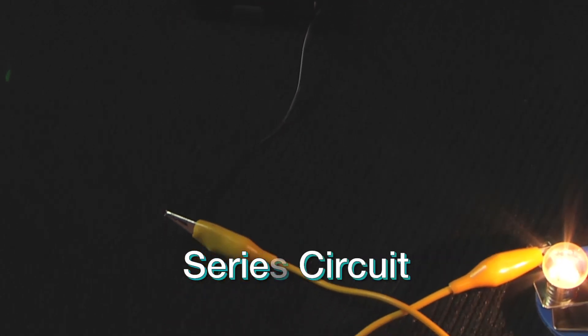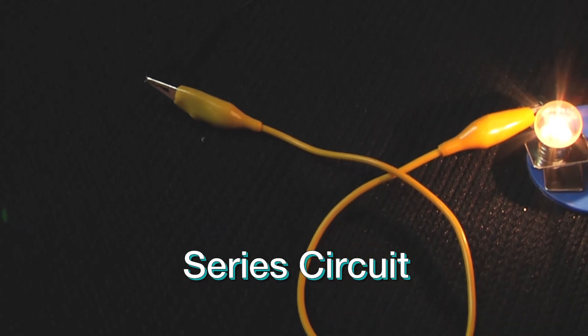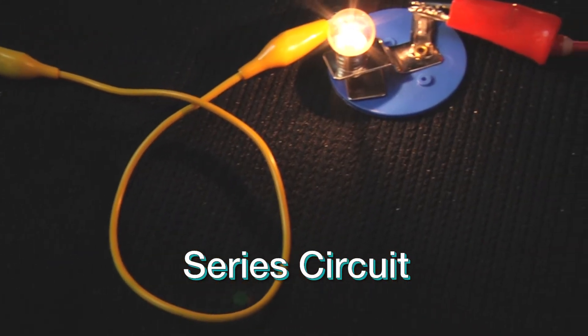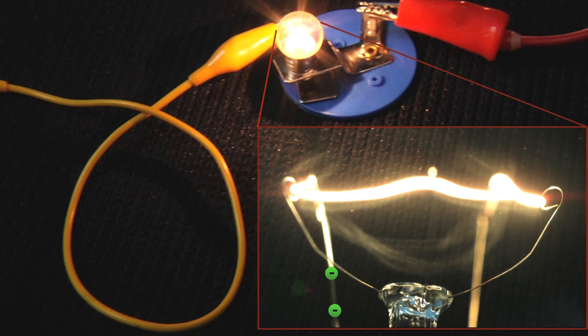In this series circuit, which powers this small bulb, electricity will travel from the positive terminal of the battery through the filament of the bulb, powering it, then continuing to the negative terminal and beginning the loop again.